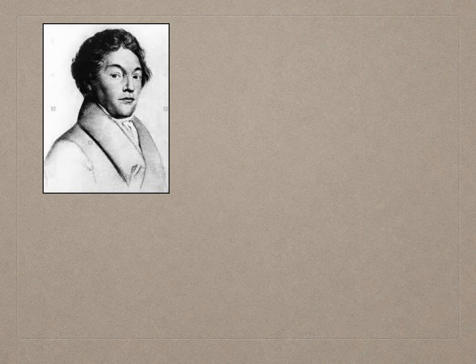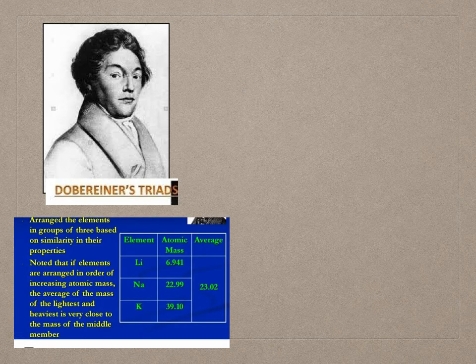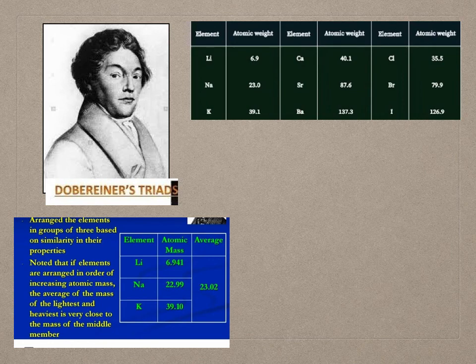In the year 1817, a German scientist Johan Wolfgang Döbereiner suggested that all properties of elements are related to their atomic masses. He made groups of three elements each having similar chemical properties and called them triads. He arranged the three elements in a triad in increasing order of atomic mass and showed that the atomic mass of the middle element was approximately equal to the mean of the atomic masses of the other two elements.